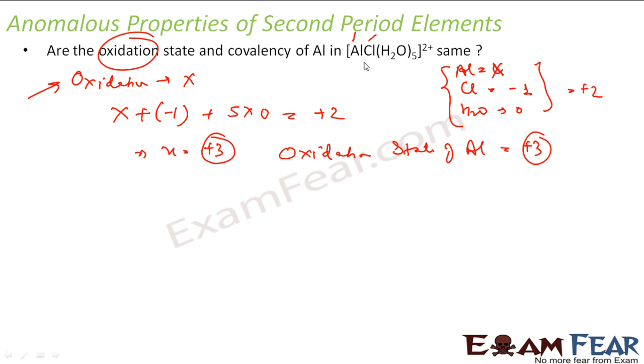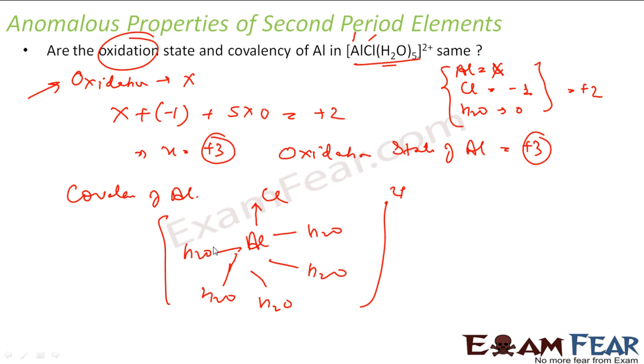Please note, oxidation state is something which depends on the compound. It may vary. Now let's talk about covalency. If you see aluminum, it is attached to 6 molecules - 1 chlorine, 5 water. So, the covalency of aluminum will be 6, 5 for 5 water molecules and 1 for chlorine. Because covalency is nothing but how many covalent bonds it has made. So, there are 6 covalent bonds. So, the covalency of aluminum is 6 and the oxidation state of aluminum is plus 3.